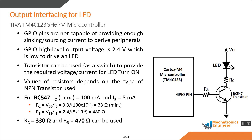We use a transistor as a switch to provide the required current and voltage to the LED. When used as a switch, the transistor operates in only two modes: cut-off or saturation. When the GPIO pin is high, the signal is applied to the base and the transistor enters saturation mode, turning the LED on. When no signal is applied to the base, the transistor is in cut-off mode. The BC547 NPN transistor has a collector current specification of 100mA and a base current specification of 5mA. Using these values, we can calculate the resistor values needed for the collector and base.